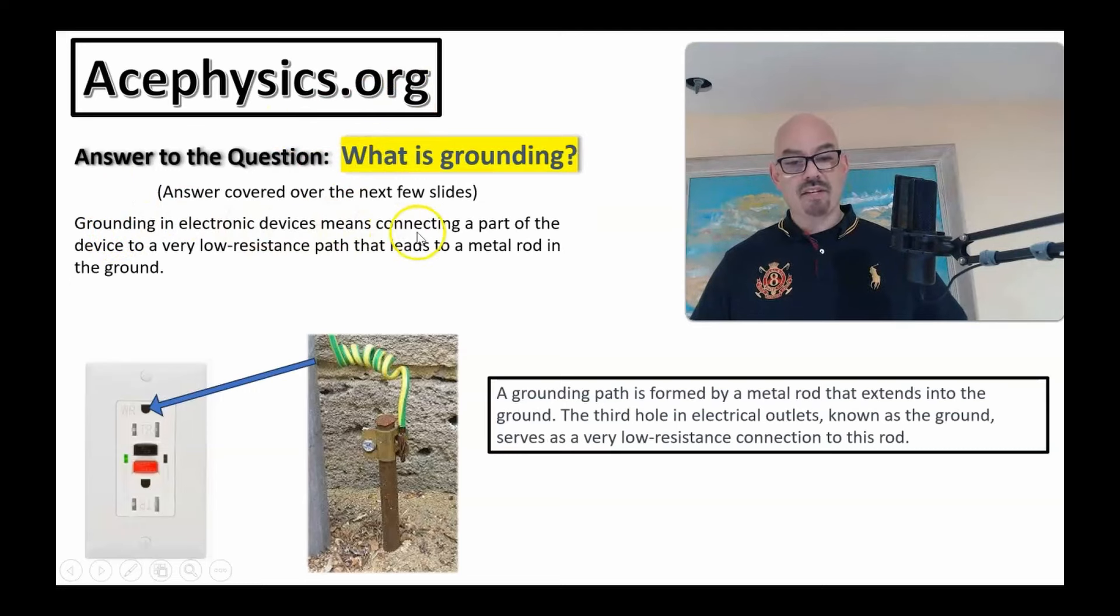Grounding in electronic devices means connecting a part of the device to a very low-resistance path that leads to a metal rod in the ground. In this picture, this is a grounding rod. It's a metal rod. It's normally about 8 to 10 feet below ground.